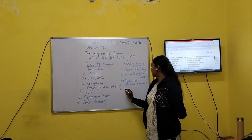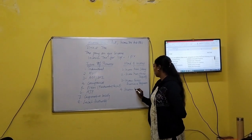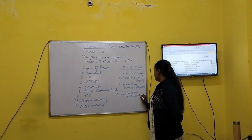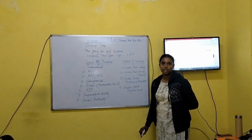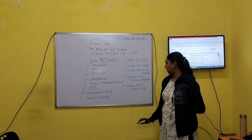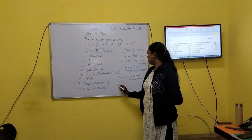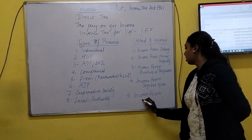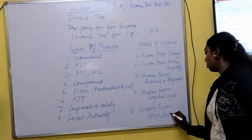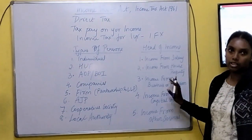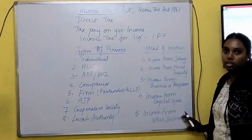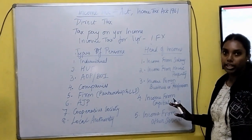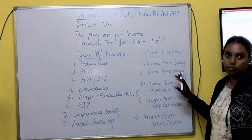Fourth one is income from capital gains. Income from capital gains means you are buying and selling any property or any assets. And last one is income from other sources. If it is not coming under these four heads, we will put it in income from other sources. These are the five heads. Each head will have different types of calculation methods.